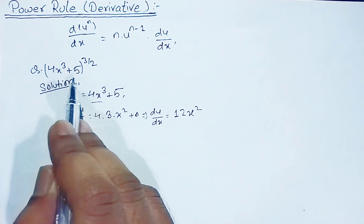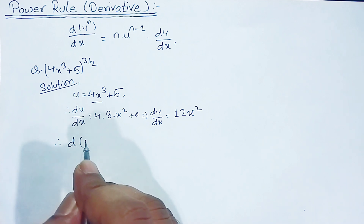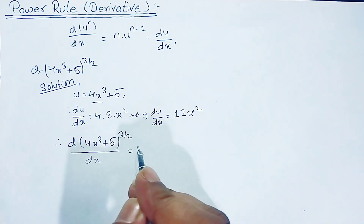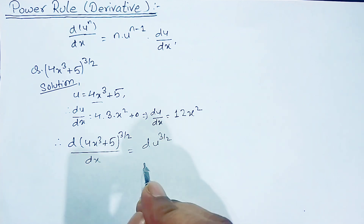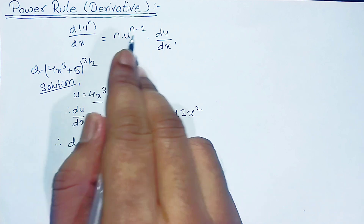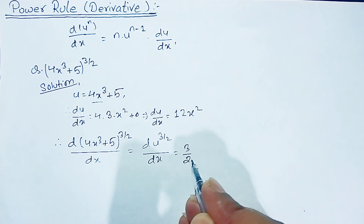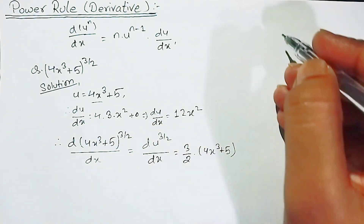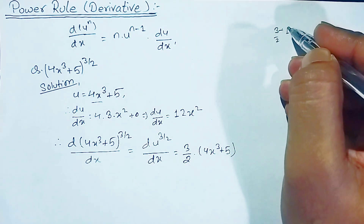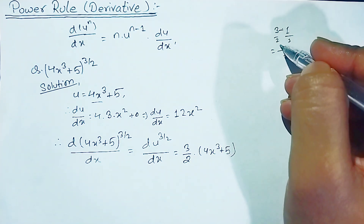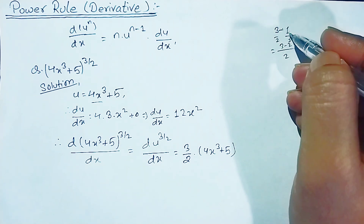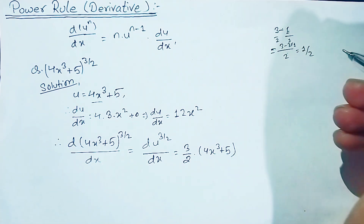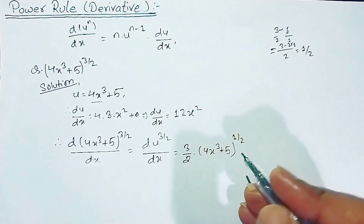We are asked to find the derivative of (4x³ + 5) to the power 3/2. This is in the form of derivative of u to the power n, where n is 3/2. We apply the formula: 3/2 times u to the power (3/2 minus 1). Computing 3/2 minus 1 gives 1/2.